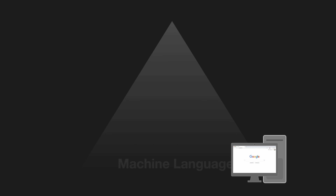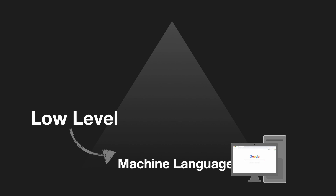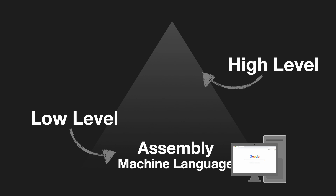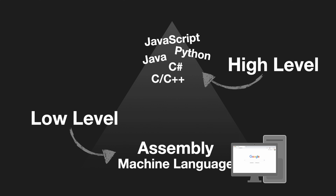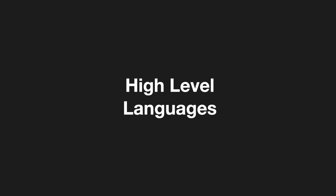Ones and zeros are machine language. Programming languages that are very close to raw machine instructions we call low-level programming languages, such as assembly. These low-level languages are still very hard to read and write fluently. So we invented high-level languages, such as JavaScript, Python, Java, C-Sharp, C, and C++. High-level languages are much easier to read and write, because they use very simple syntax and easily understandable semantics.